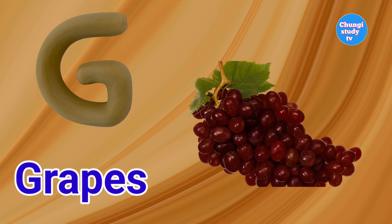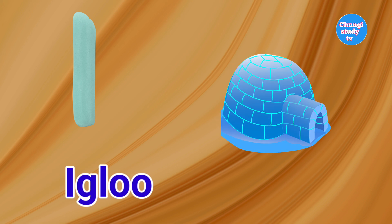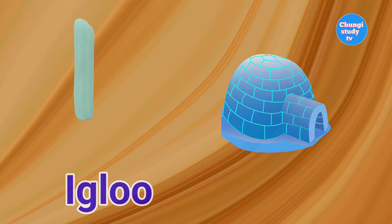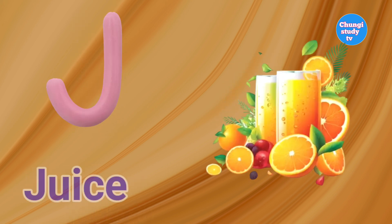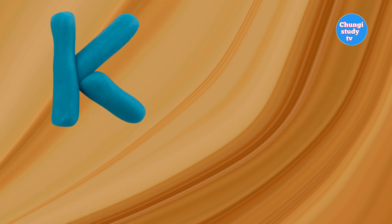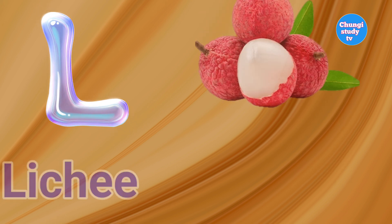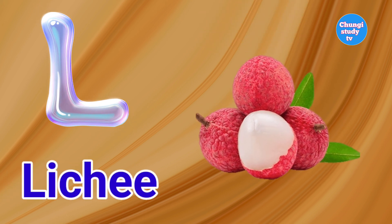G for Grape. H for Hexagon. I for Igloo. J for Juice. K for Koala. L for Litchi.